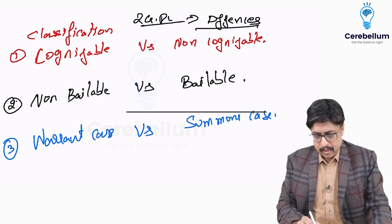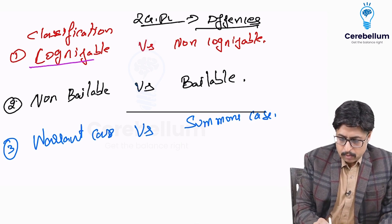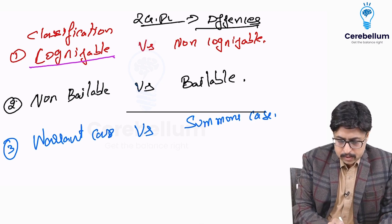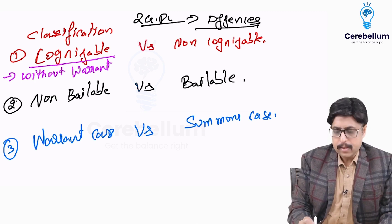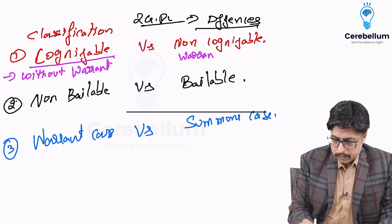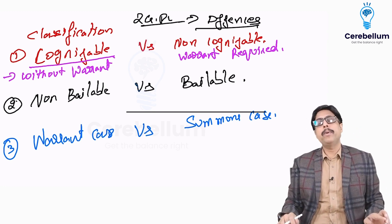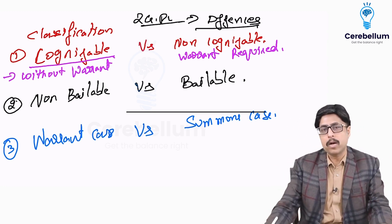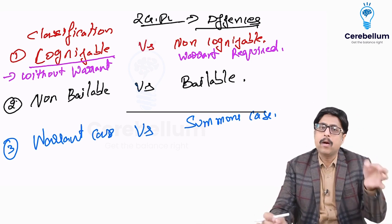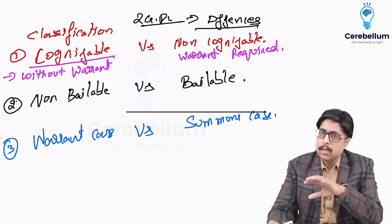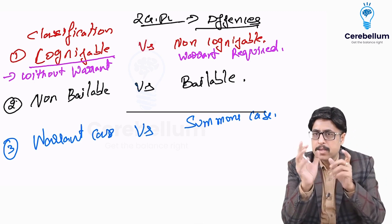What is a cognizable offense? A cognizable offense is an offense where the person can be arrested without a warrant. Whereas a non-cognizable offense requires a warrant for arrest.